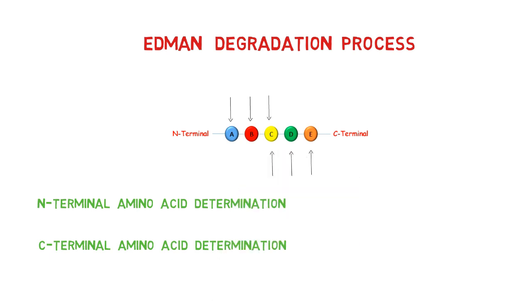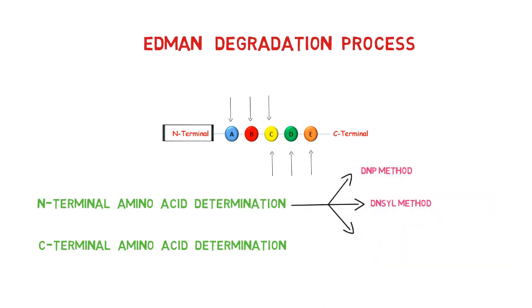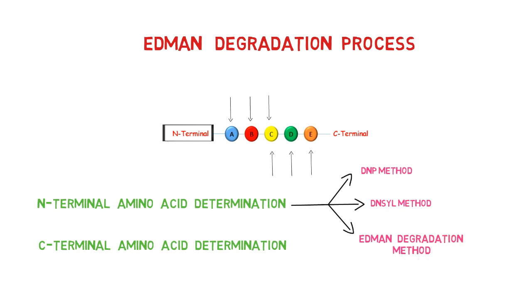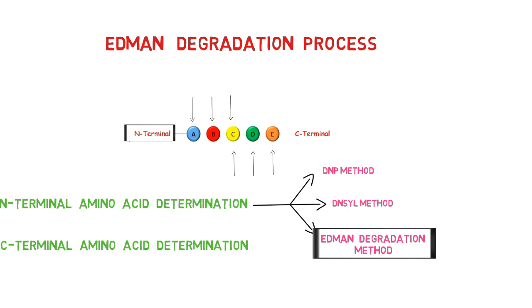In this video, I will use the N-terminal amino acid determination method. Different methods are used for this purpose, like the DNP method, the Dancel method, and the Edman Degradation method. I will use the last one, which is Edman Degradation.